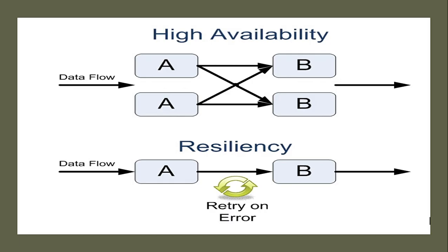High Availability means the system or application should be available at all times, and that can be achieved by doing replication. If we have two systems or two applications running, we can replicate to more than one so that if one goes down, the other will still be available.